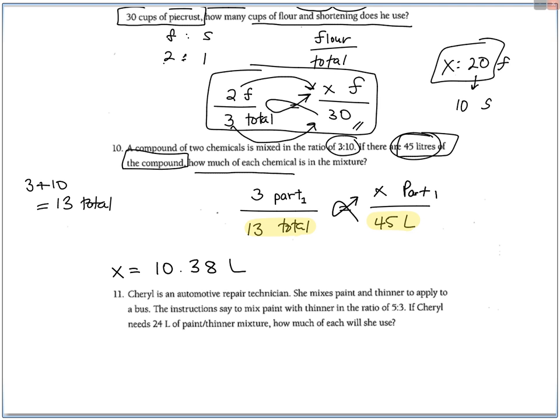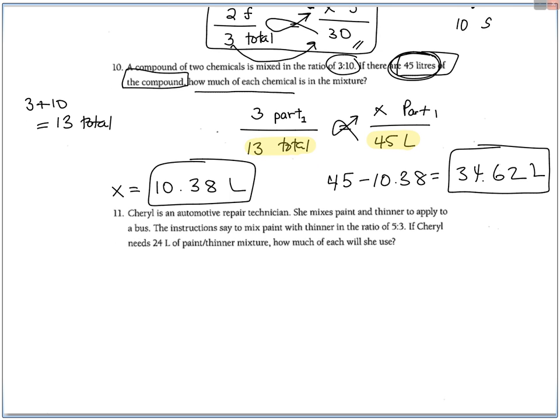Now to get the other missing part, I'll just subtract from the total. So 45, take away that last answer, 34.62 after rounding. So those are the two parts. Roughly 10 liters here and 35 liters here. It adds up to the 45 in the 3 to 10 ratio.